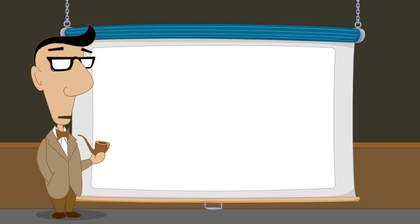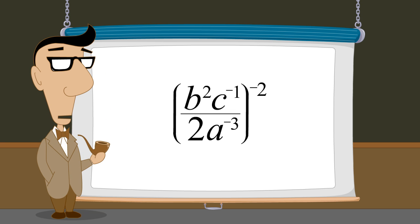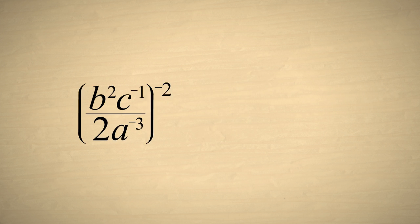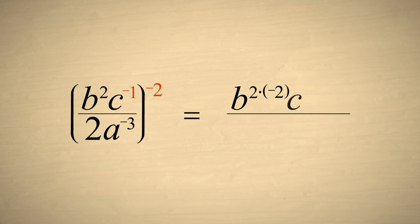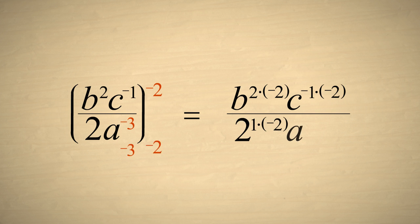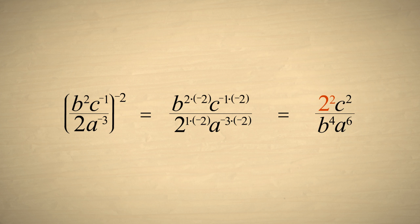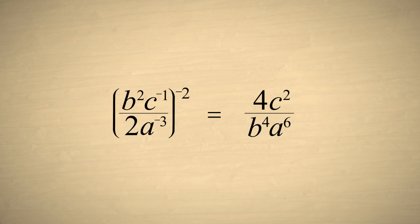As our last example, we will simplify a more complicated fractional expression raised to a negative power. Since this expression is raised to the negative second power, we start by multiplying each exponent by negative two. Next, we can eliminate negative exponents by moving those terms to the opposite sides of the fraction. As the final step, we can write two squared as four, and this expression is written in its simplest form.